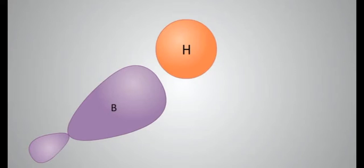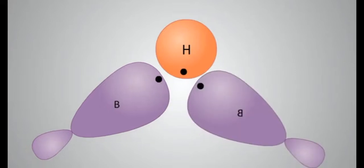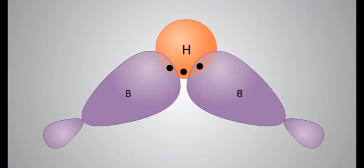14 electrons are required. But there are only 12 electrons, 6 from 2 boron atoms and 6 from hydrogen atoms.